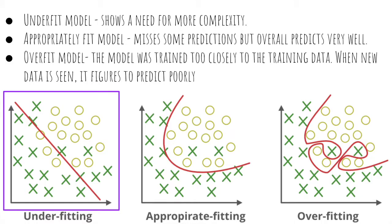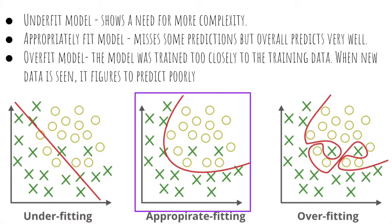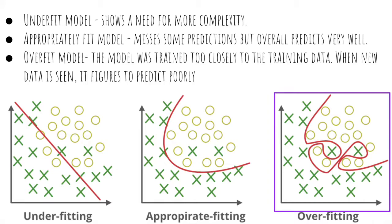Underfitting and overfitting correspond directly to bias and variance. The image on the left shows an underfit model — a model with high bias error that is not sophisticated enough, making poor predictions, though it will have low variance due to its simplicity. The middle image is an appropriately fit model that classifies most points correctly with a relatively simple curve, producing low variance. The image on the right is an overfit model fit too closely to the data, classifying all training examples correctly but neglecting the more general trend and being too responsive to small changes.